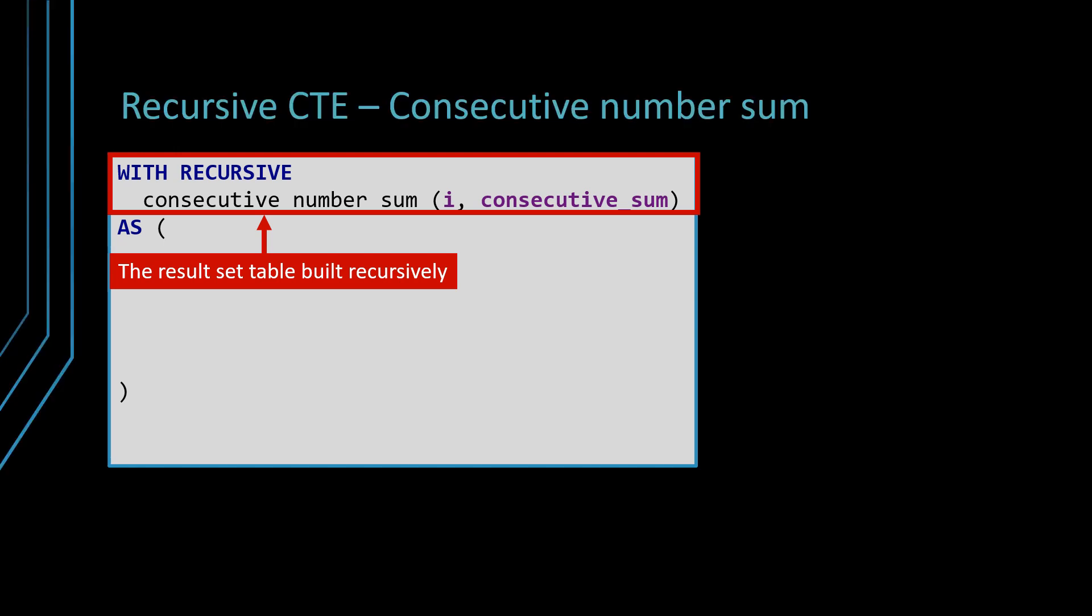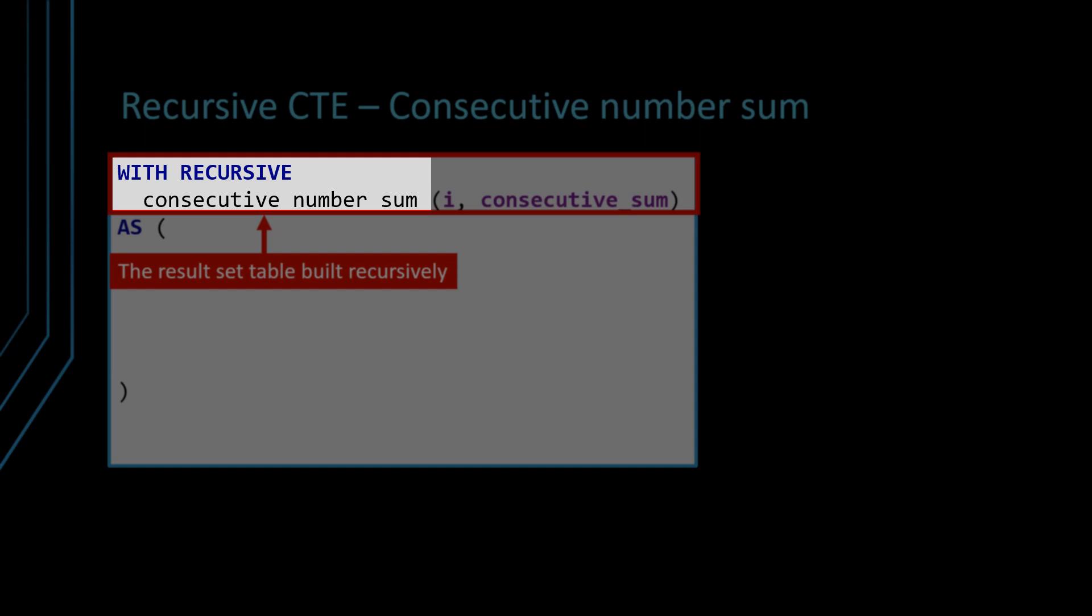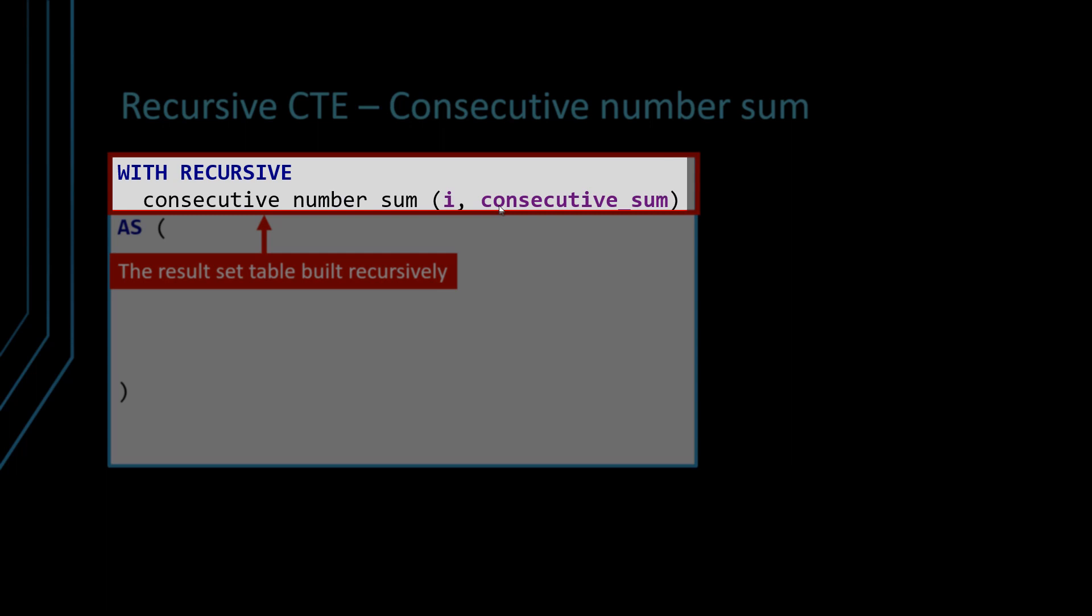So just like any common table expression, you give it a name. This is consecutive number sum. And we define two columns that are being included in the result set. One is the value of i, which is the counter that we keep on increment. And the other one is the consecutive sum.